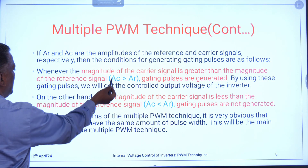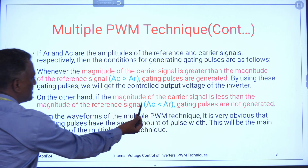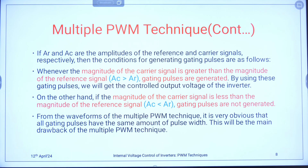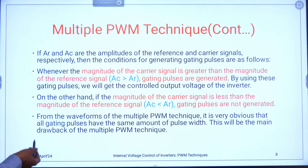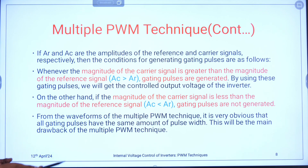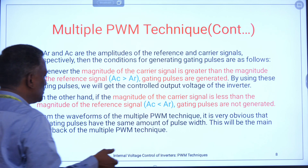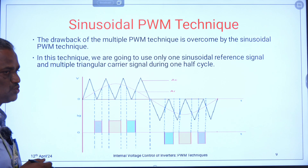However, this method suffers from one particular disadvantage. From the waveforms of the multiple PWM technique, it is very obvious that all gating pulses are of the same width — the width of the pulse is the same. When the width of the pulse is the same, it becomes the main drawback of this method. In order to avoid this drawback, we go for a very effective method — sinusoidal pulse width modulation. This method is totally different compared to the previous two methods.